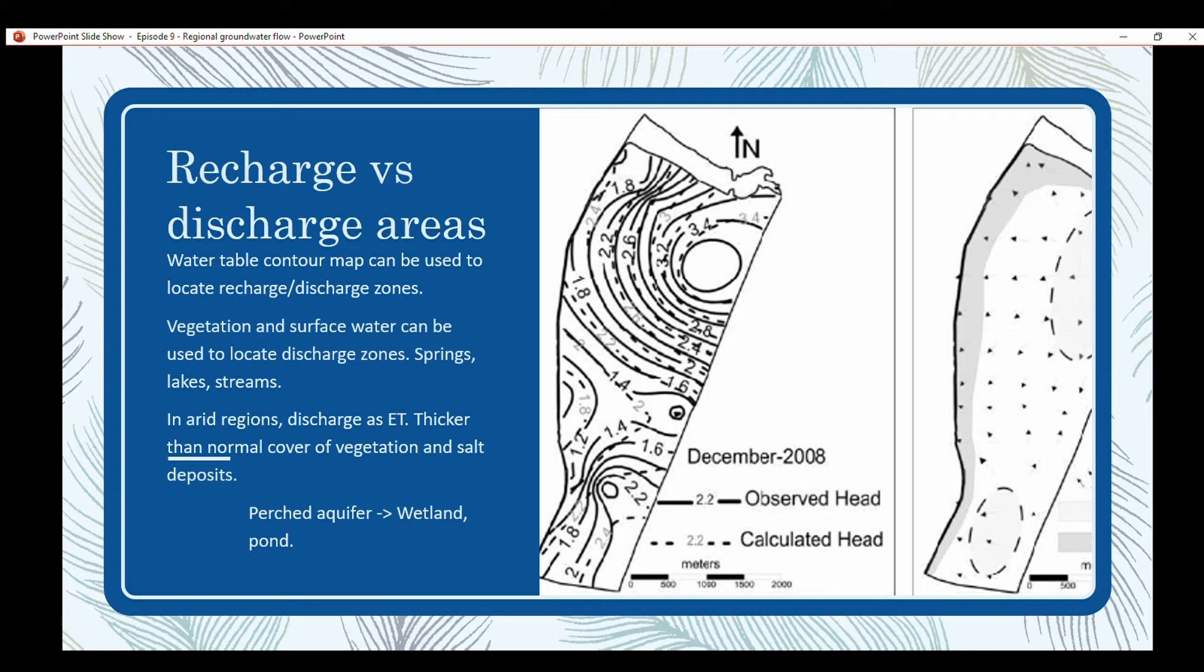In arid regions, discharge occurs as evapotranspiration. There's a thicker than normal cover of vegetation, and you might have salt deposits occur at a discharge zone. A perched aquifer could lead to a wetland or pond.